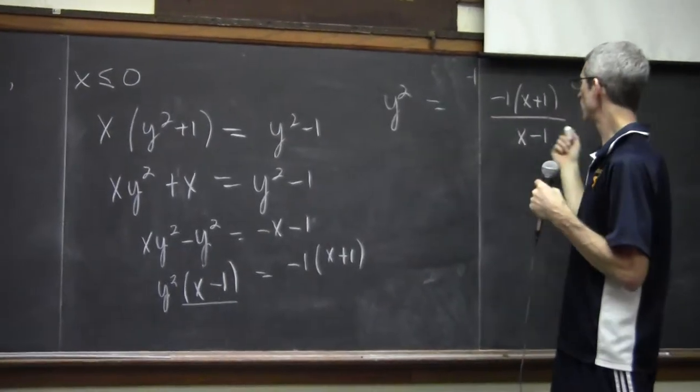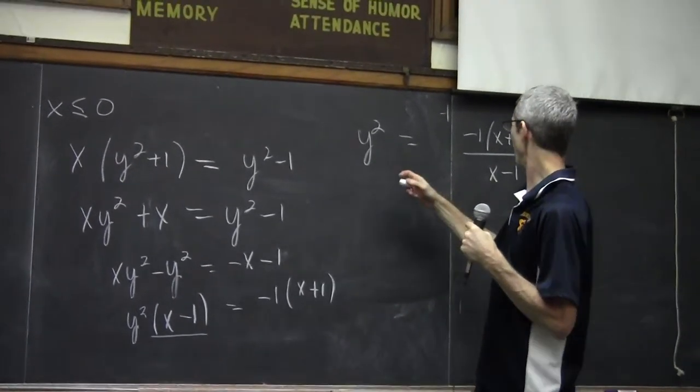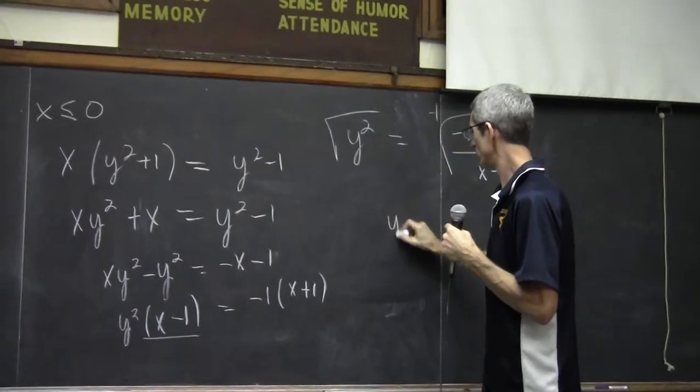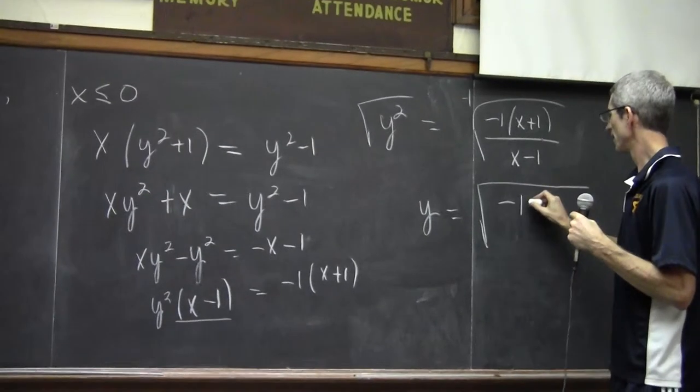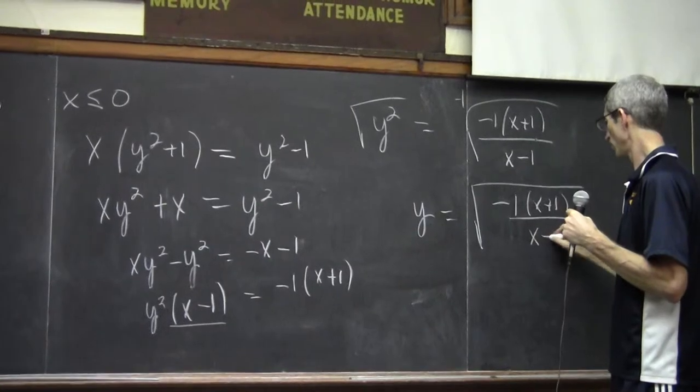Now all I have to do is take the square root of both sides. And that's your final answer. Negative 1 times x plus 1 over x minus 1.